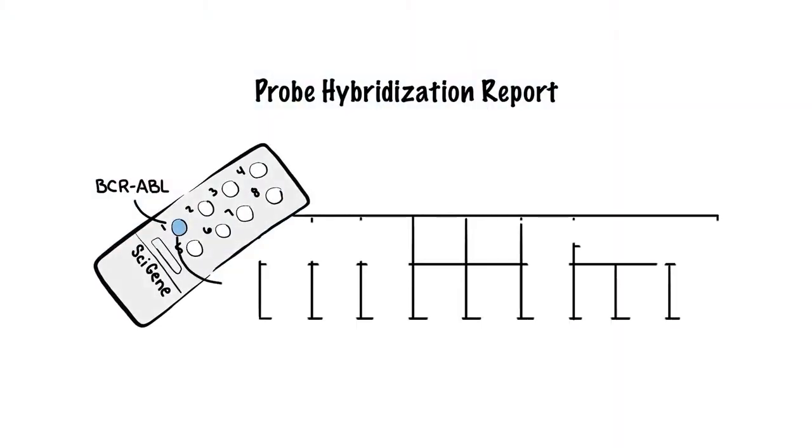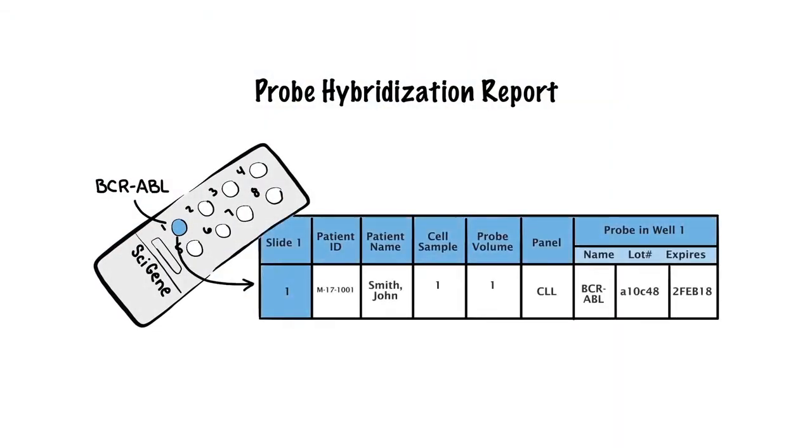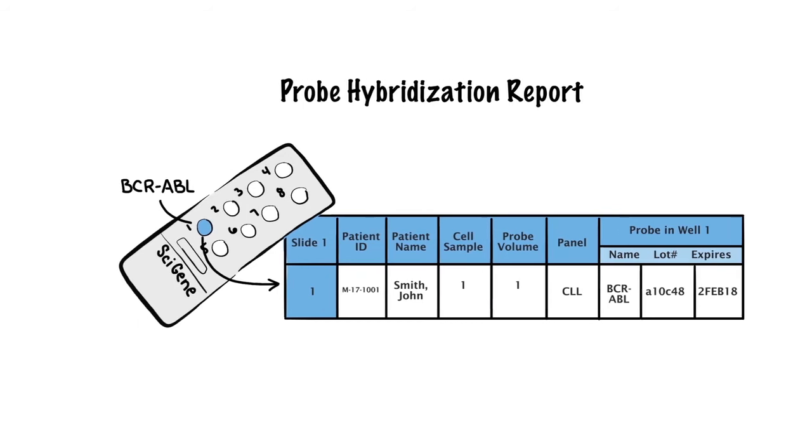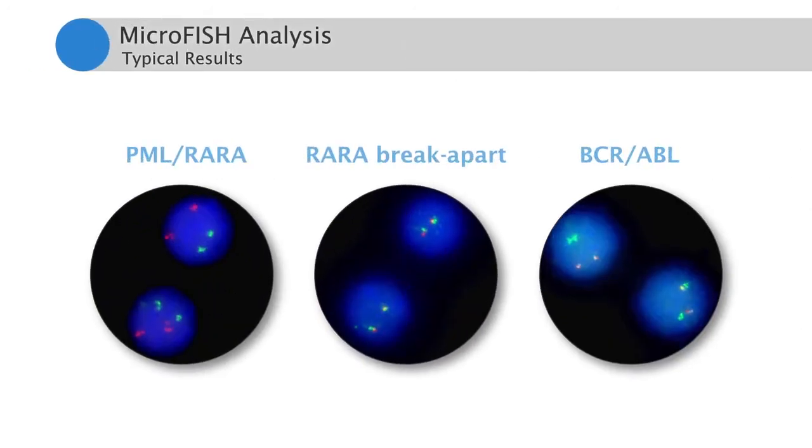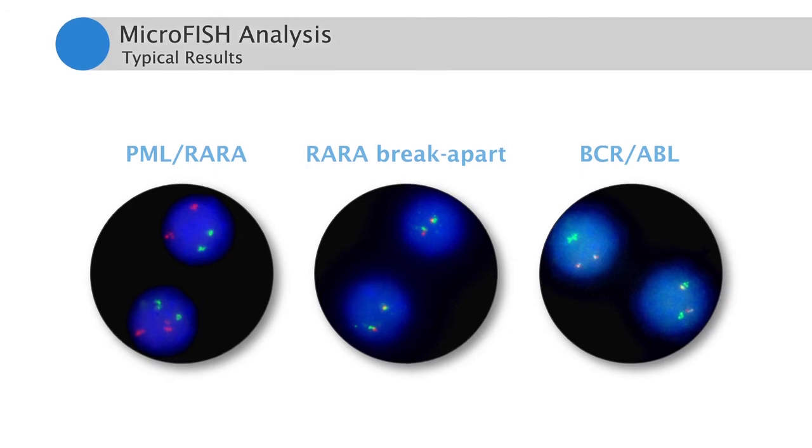The robot then generates a final report for each patient, detailing every probe hybridization. The MicroFISH system with Scorpion Robot removes all labor-intensive steps, producing consistent, high-quality results.